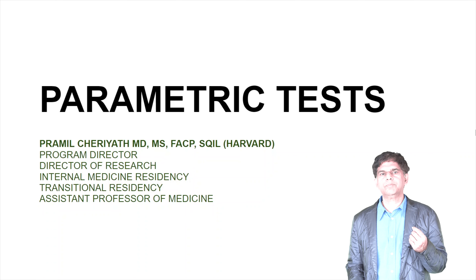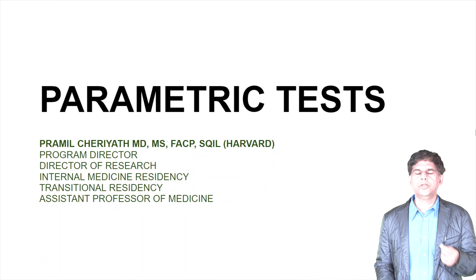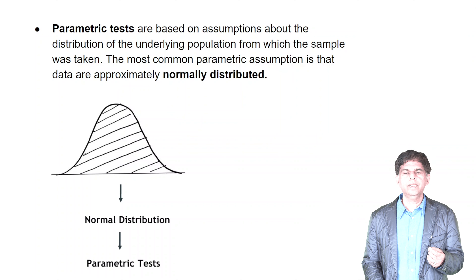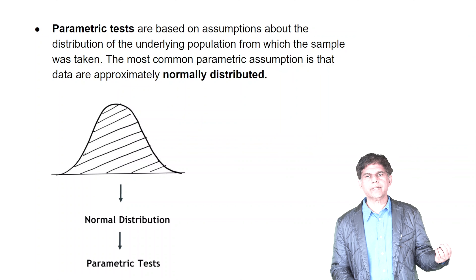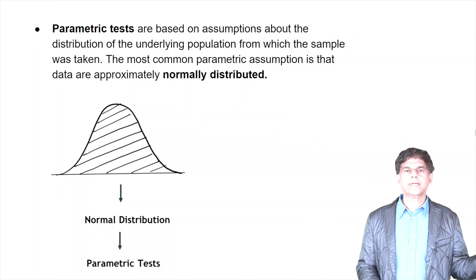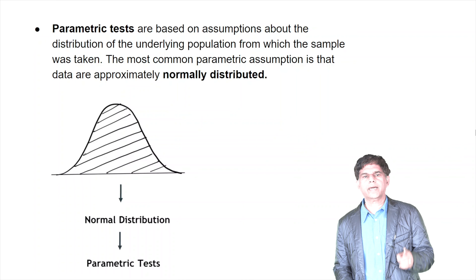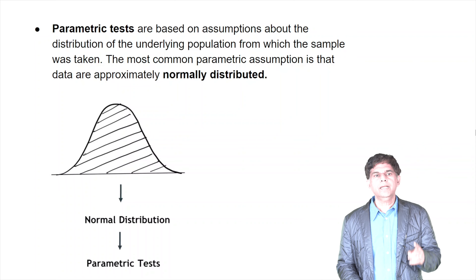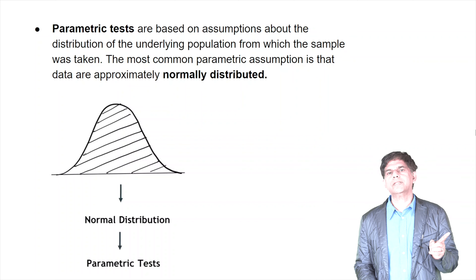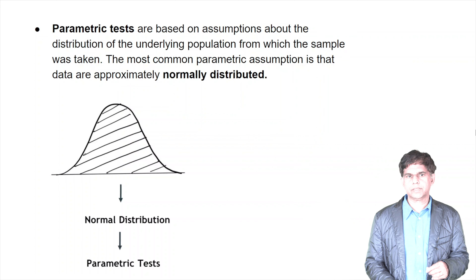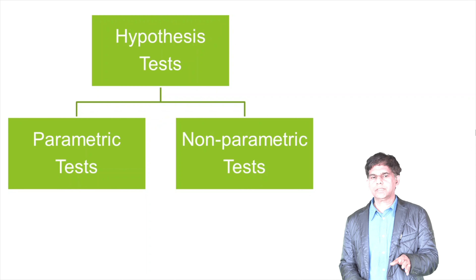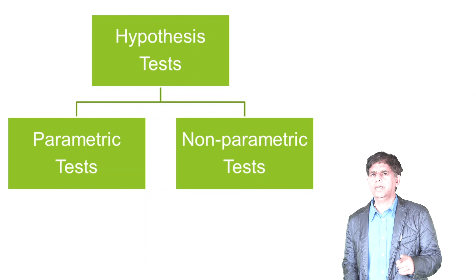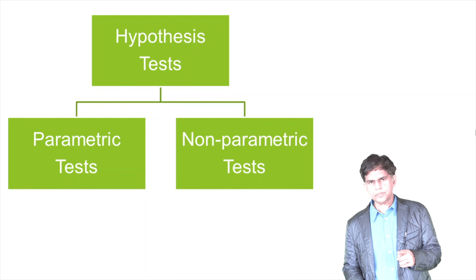So when do we use parametric tests? The assumption is that the data has to have a normal distribution, meaning mean, median, and mode are equal. You can put your data on a histogram and you should get a bell-shaped normal distribution. If the data is not normally distributed, then you have to think about non-parametric tests.